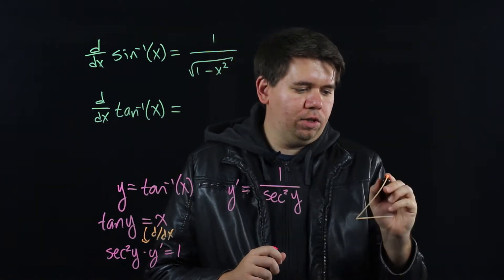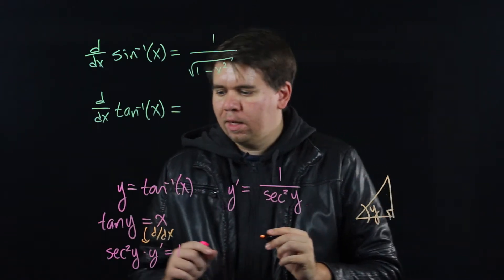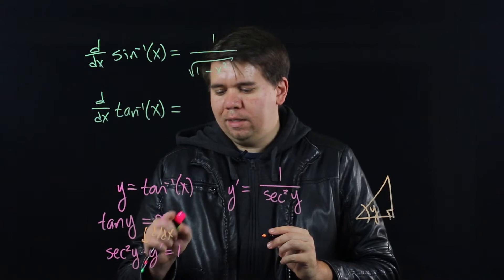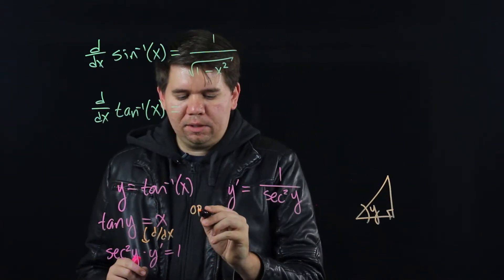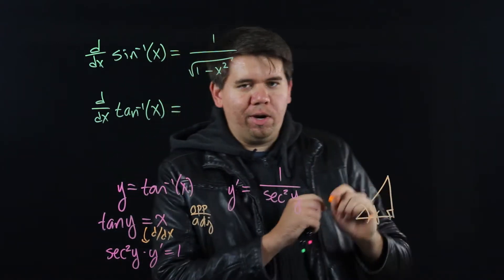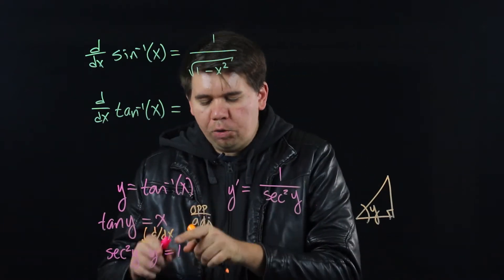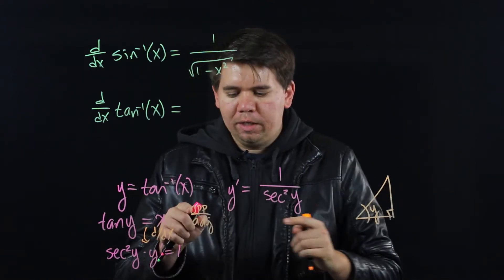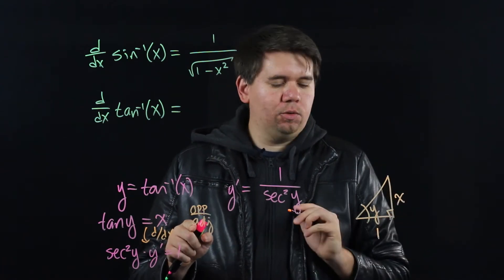Construct a triangle that has as one of its angles y. Since tan of y is equal to x, and you know tan is opposite over adjacent in a right triangle, your opposite to adjacent ratio must be x to 1. x is just x over 1. So my opposite is x, my adjacent is 1.